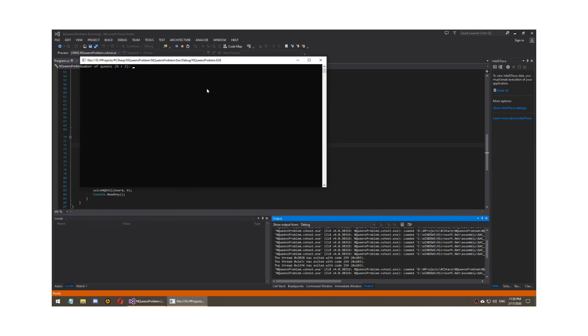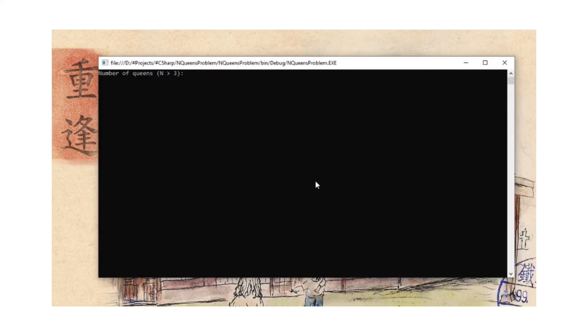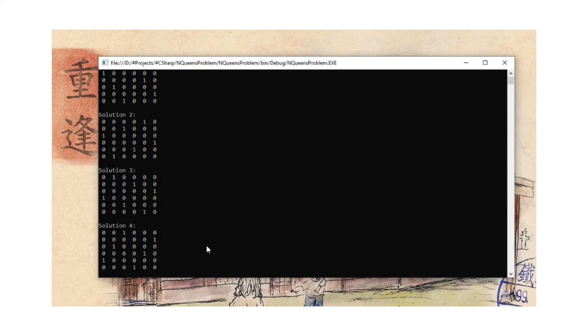It's a simple console application written in C sharp. It takes in the number N, which is the number of queens and also the board size, and it spits out all the solutions for the N Queens puzzle. Pretty cool, right?